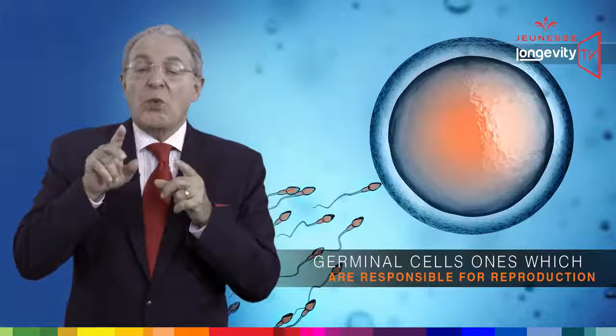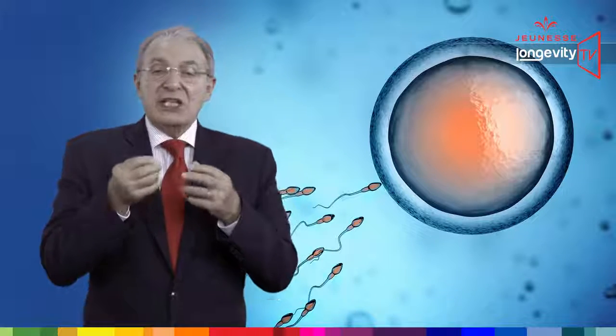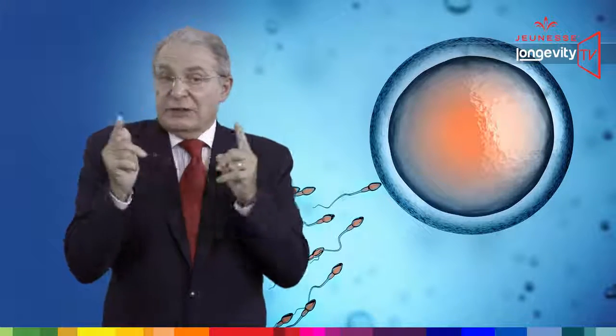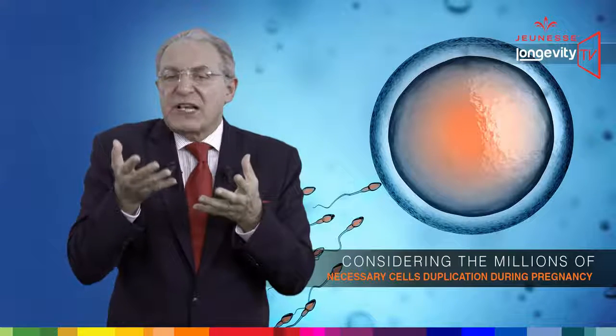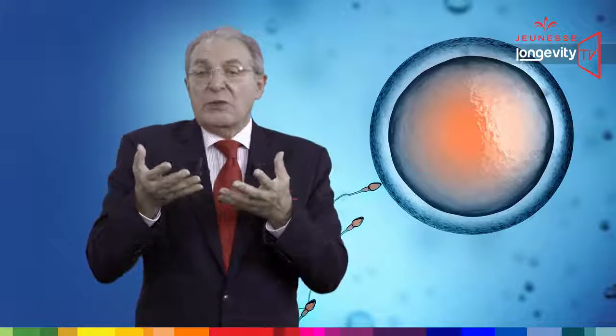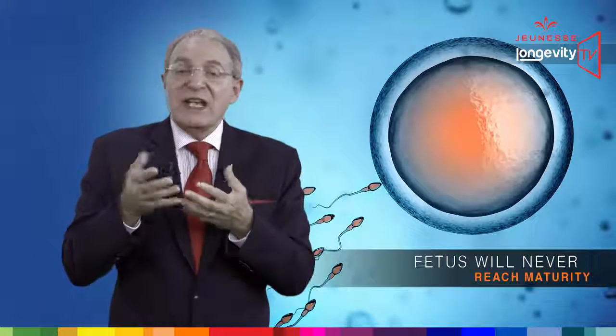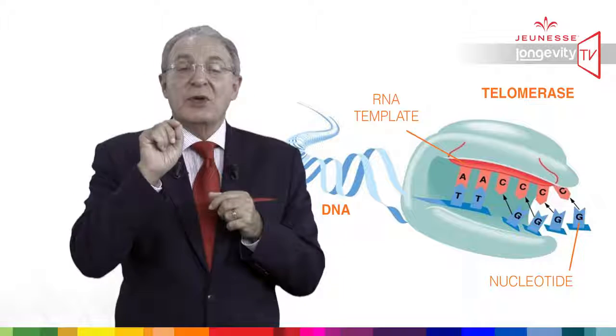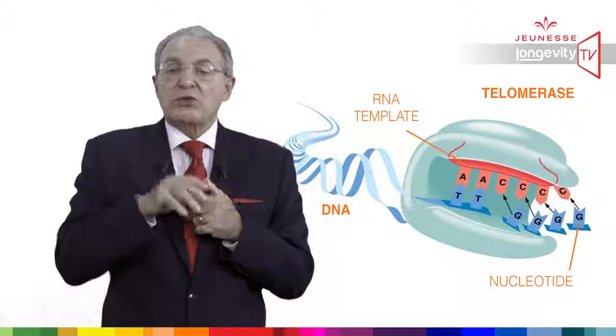Elizabeth Blackburn from the University of California, Berkeley, discovered why — and with this discovery she won the Nobel Prize in 2009. While working on germline cells — the ones responsible for reproduction — she found that their telomeres never shorten. This is almost a miracle of nature, because life would be impossible if an embryo inherited short telomeres from its parents. Considering the millions of necessary cell duplications during pregnancy, all the cells would reach senescence in just a few days and the fetus would never reach maturity.